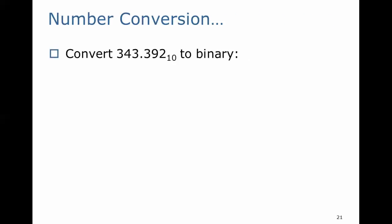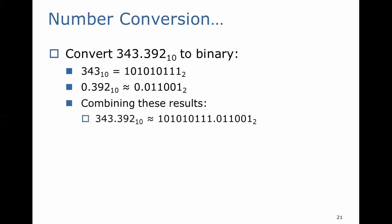Now, if we're going to convert the decimal value 343.392 base 10 to binary, we would take the two previous steps and then combine them together. We saw that 343 base 10 is equal to 101010111 base 2, and we saw that the fractional portion 0.392 base 10 was approximately 0.011001. So we combine these together and we arrive at our binary approximation for 343.392.